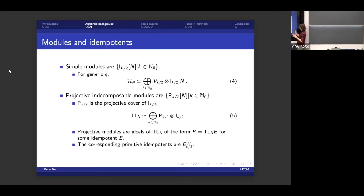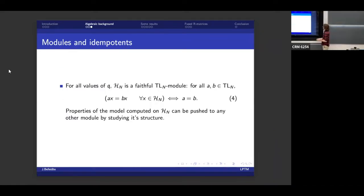So if I now try to decompose TL_N itself, so the algebra seen as a module over itself, what do I get? I get the direct sum of all the projectives, tensored by the simple module i_{k/2}. Now, today I'm mainly interested in a case where Temperley-Lieb is not semi-simple. That means that q has to be a root of unity. Usually people avoid the root of unity case because it's more complicated. But I like complicated, so I want the root of unity.